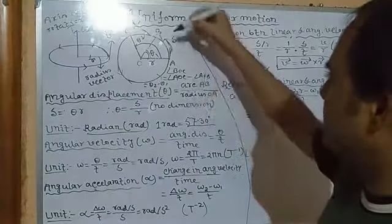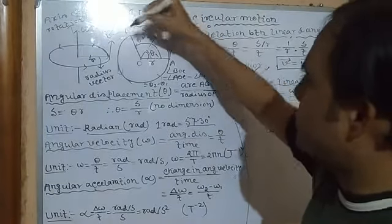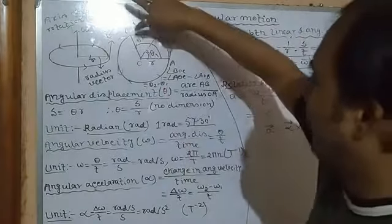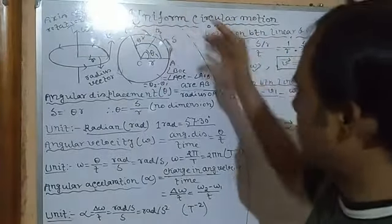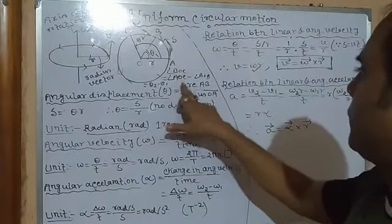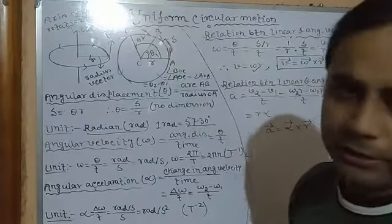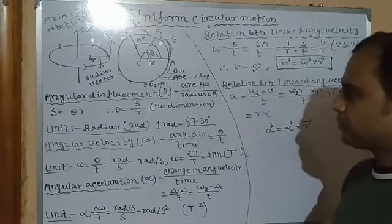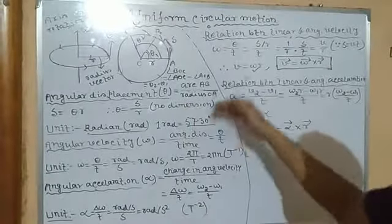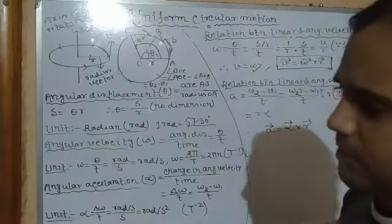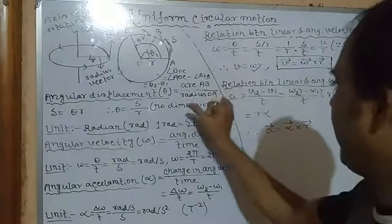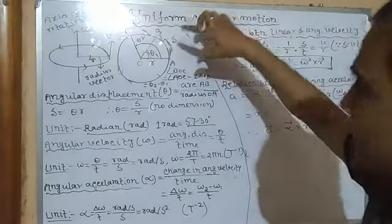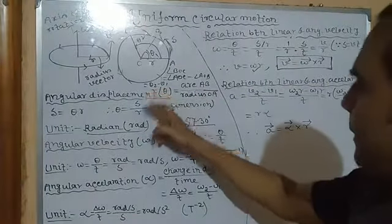If the particle further moves from point B to C, and if the entire angle is theta 2, then the final angular displacement — angle BOC — is equal to angle AOC minus angle AOB, that is theta 2 minus theta 1. Angular displacement is generally expressed as the ratio between the arc and the radius of the circle: theta equals S by R, where S is the distance traveled by the particle. So if S equals theta times R, the distance traveled in circular motion equals angular displacement times the radius.